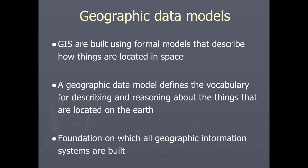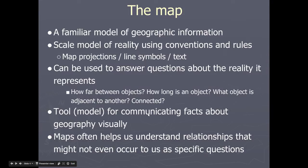This is a very important concept in geographic information systems — it helps us define and understand the types of data that we use to store, organize, and work with in our GIS. As an example, the old common paper map — maybe a folded trail guide or a transportation map — is a familiar model of geographic information. We use a map to help us better understand the reality of the world around us. It's actually a scaled model of reality, and it uses some conventions and rules that we can all agree on.